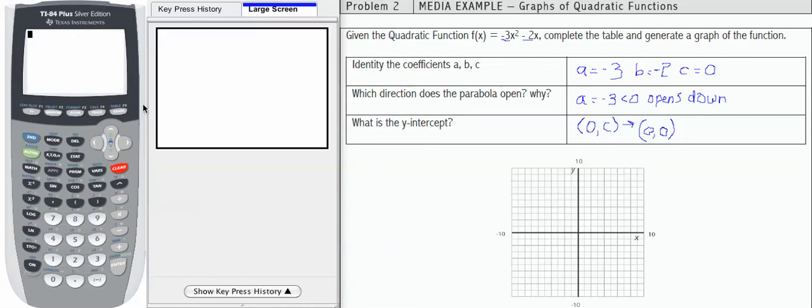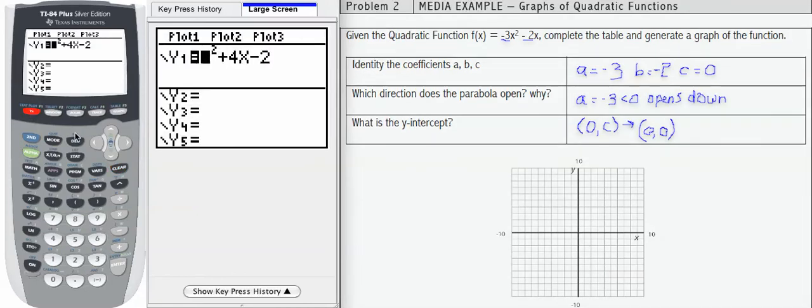Now, let's go ahead and graph it on our calculator. I'm going to go to y equals, clear my list, and I'm going to enter negative 3x squared minus 2x.